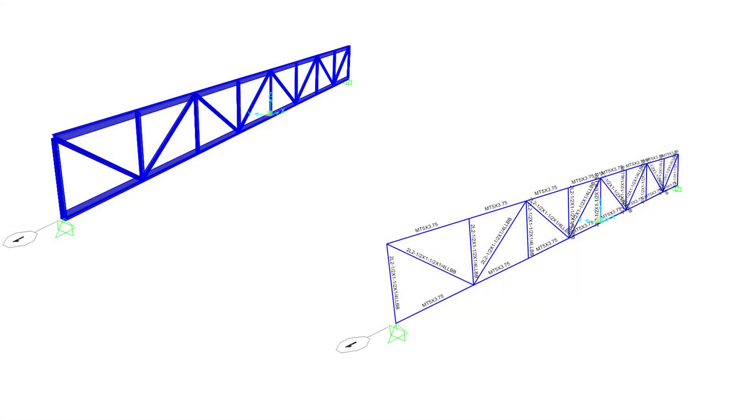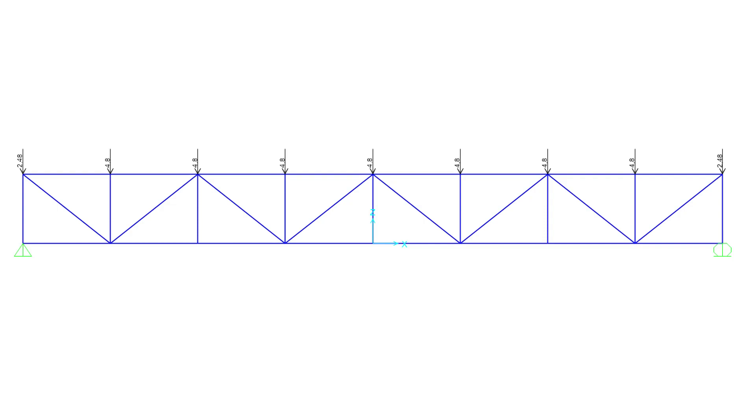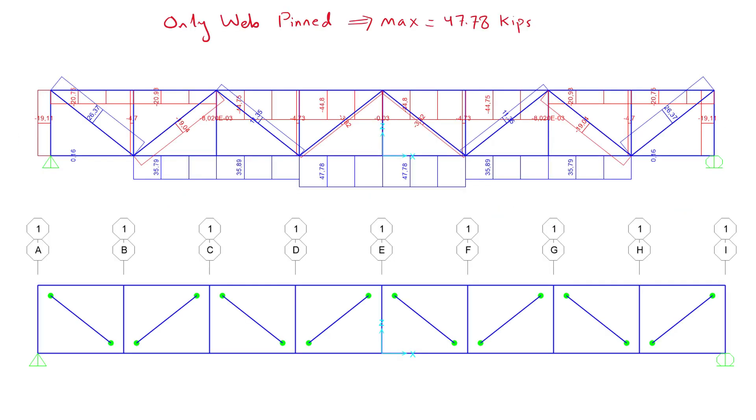Alternatively, we can model and analyze this problem with a finite element software. I assumed the webs to be double angle, long leg, back to back, 2.5 inches long, 1.5 inches wide and a quarter inch thick members. The loads are applied exactly as done previously where the interior loads differ from the exterior loads. We can model the truss by either fully releasing the moment at the web member ends acting as a hinged connection, and by that we receive a maximum tensile force of 47.78 kips.